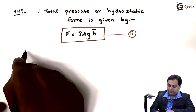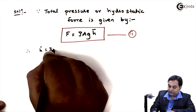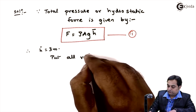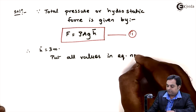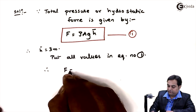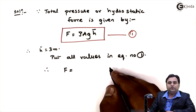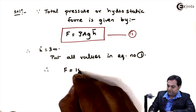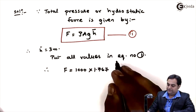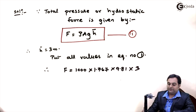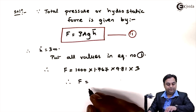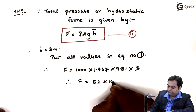Therefore H̄ = 3 meter. Putting all values in the formula: F = 1000 × 1.767 × 9.81 × 3. From this, the hydrostatic force comes out to be 52 × 10³ Newton. This is the first answer.